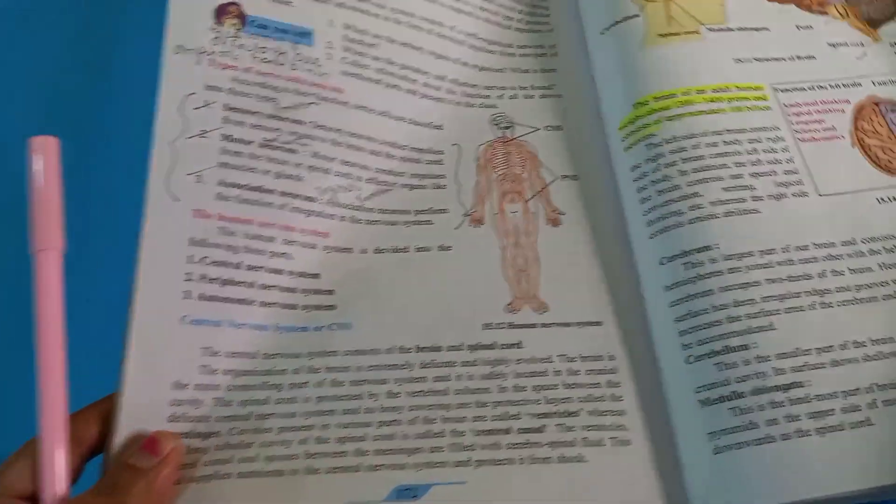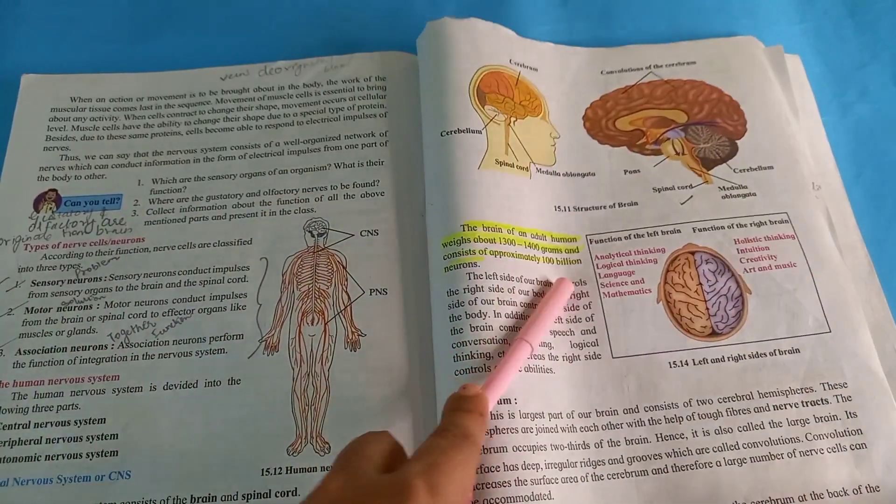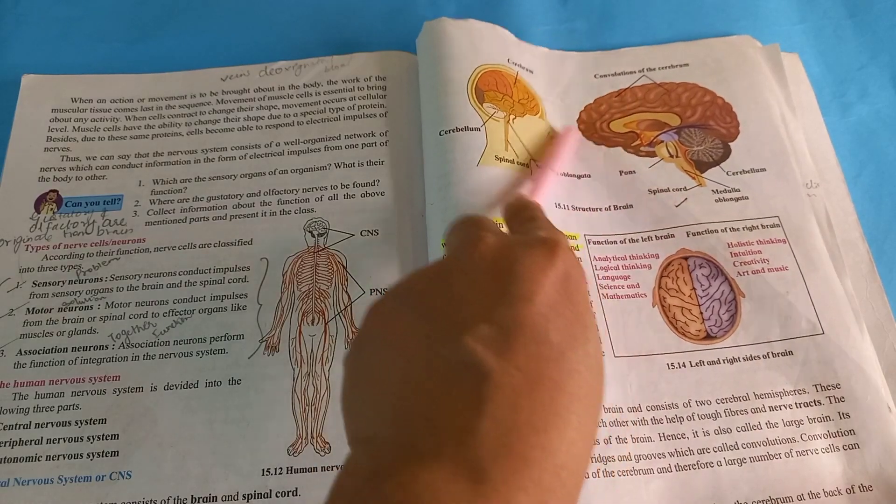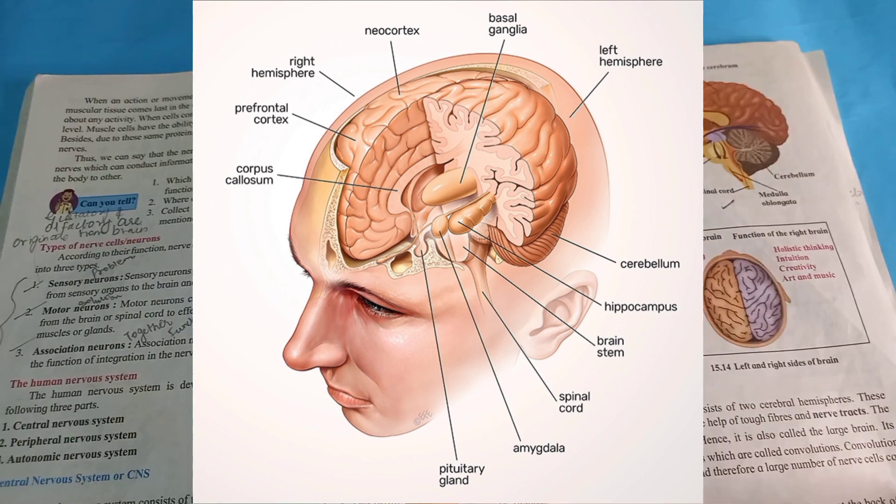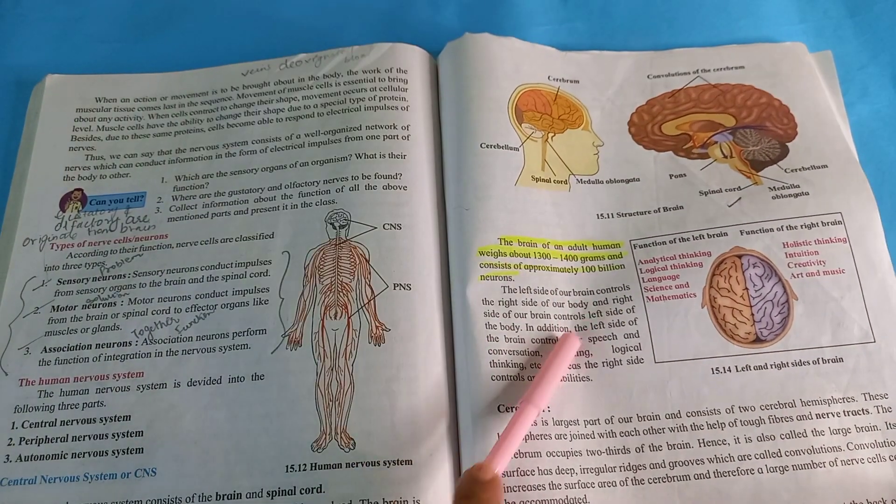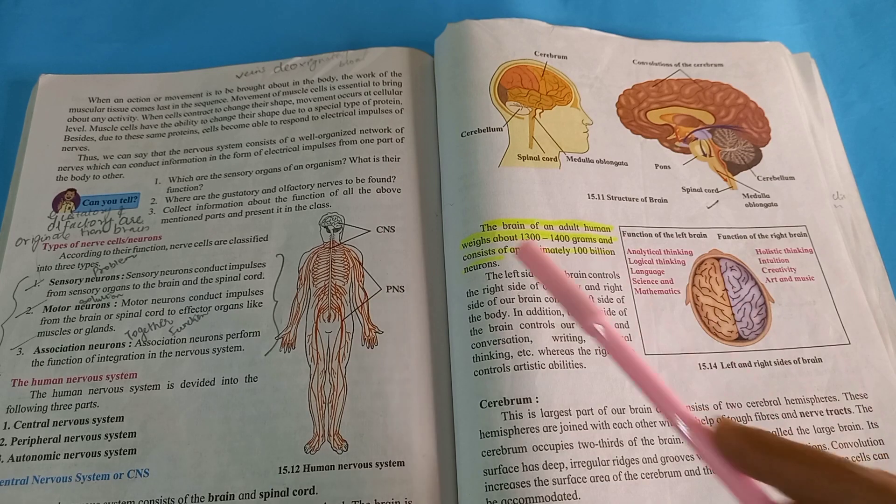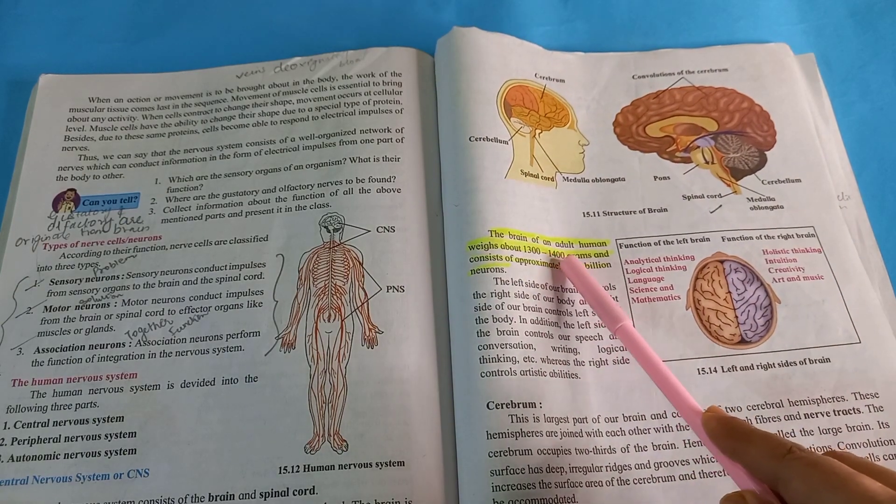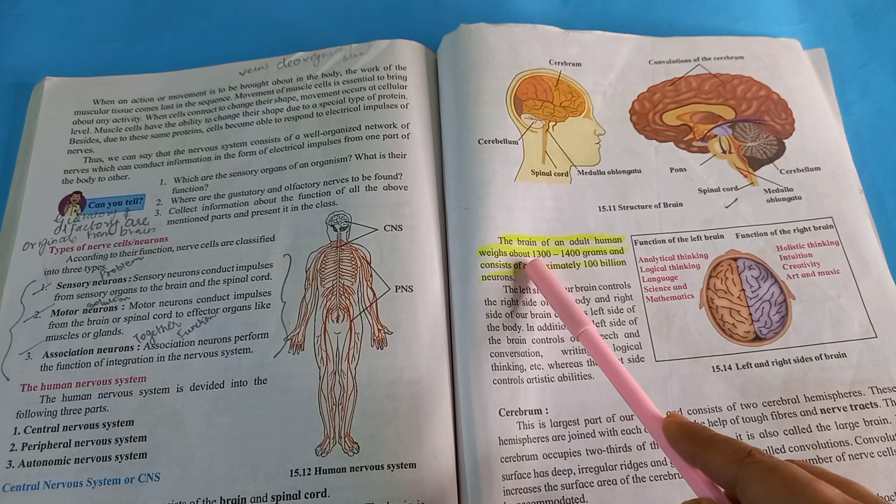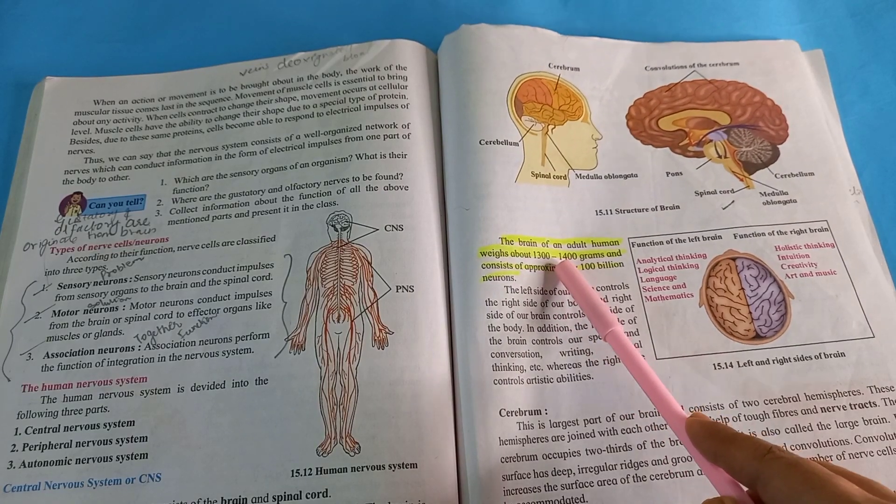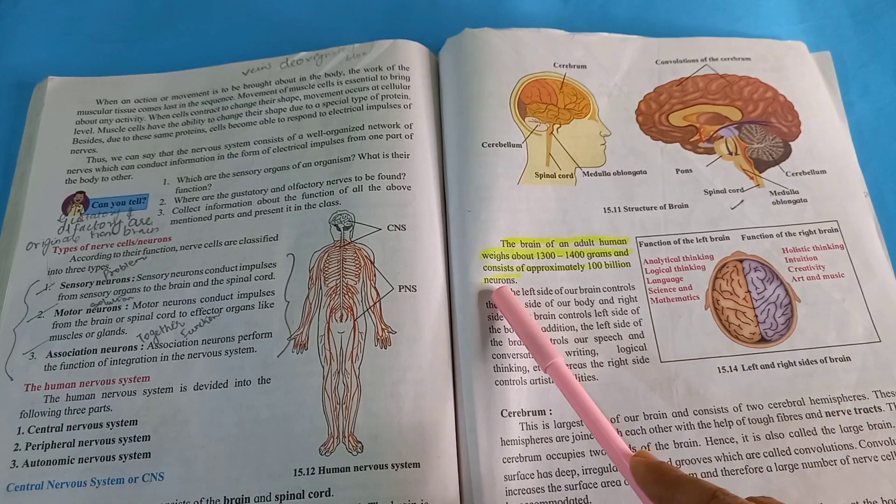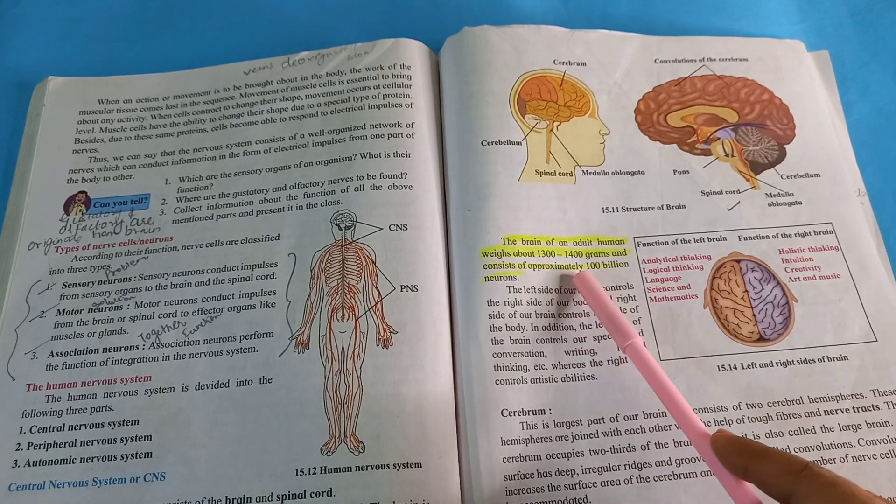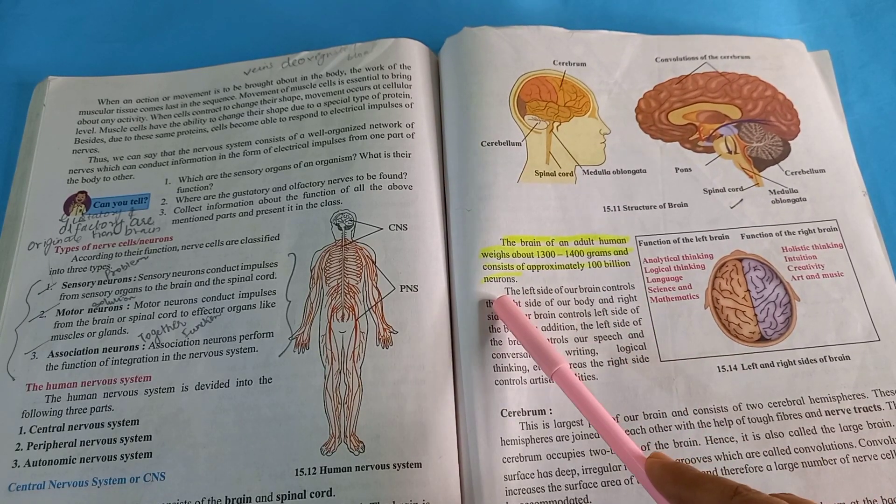I will show you pictures also. Now I will tell you about the brain. This is page number 173. See this human brain, see how complicated and how delicate this is. Now I will tell you these facts, very interesting facts. The brain of an adult human weighs about 1300 to 1400 grams and consists of approximately 100 billion neurons.